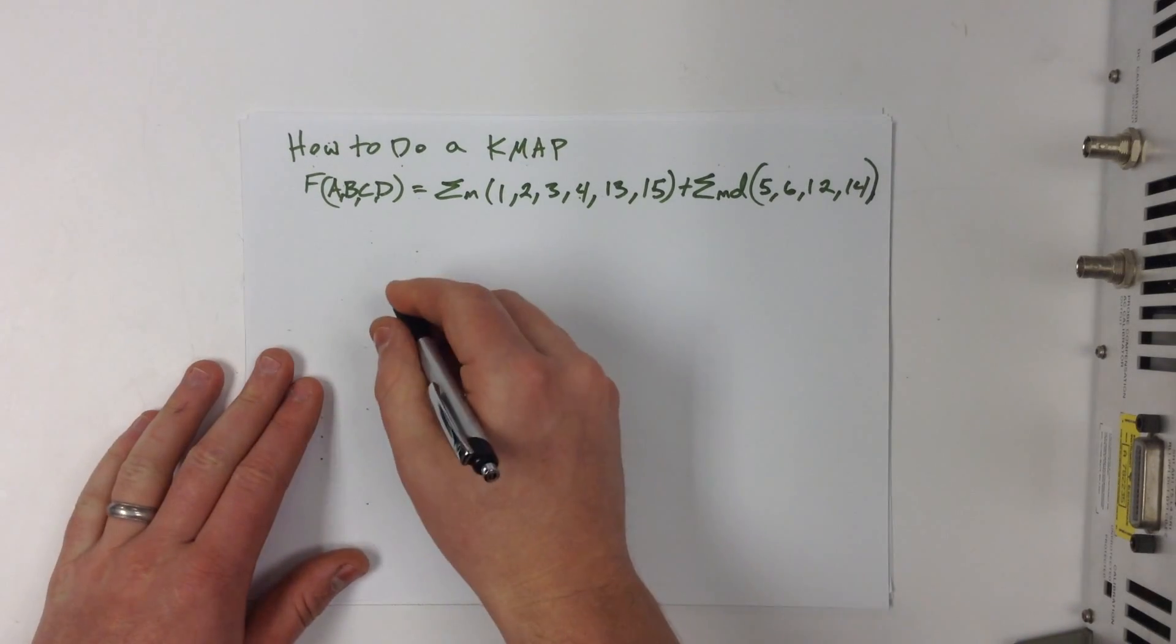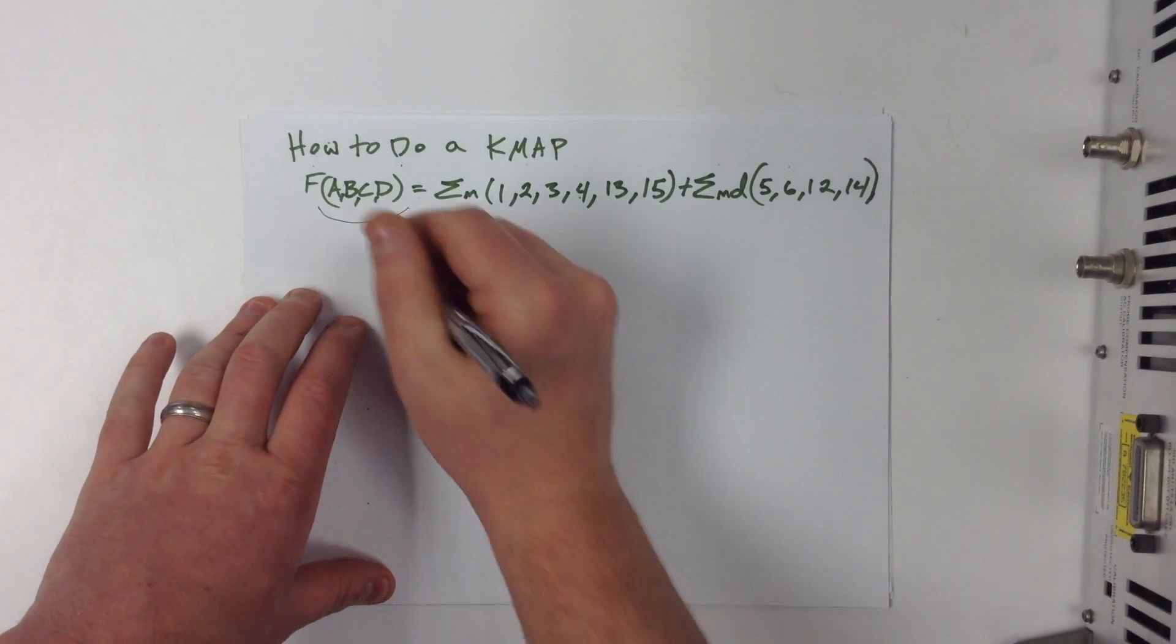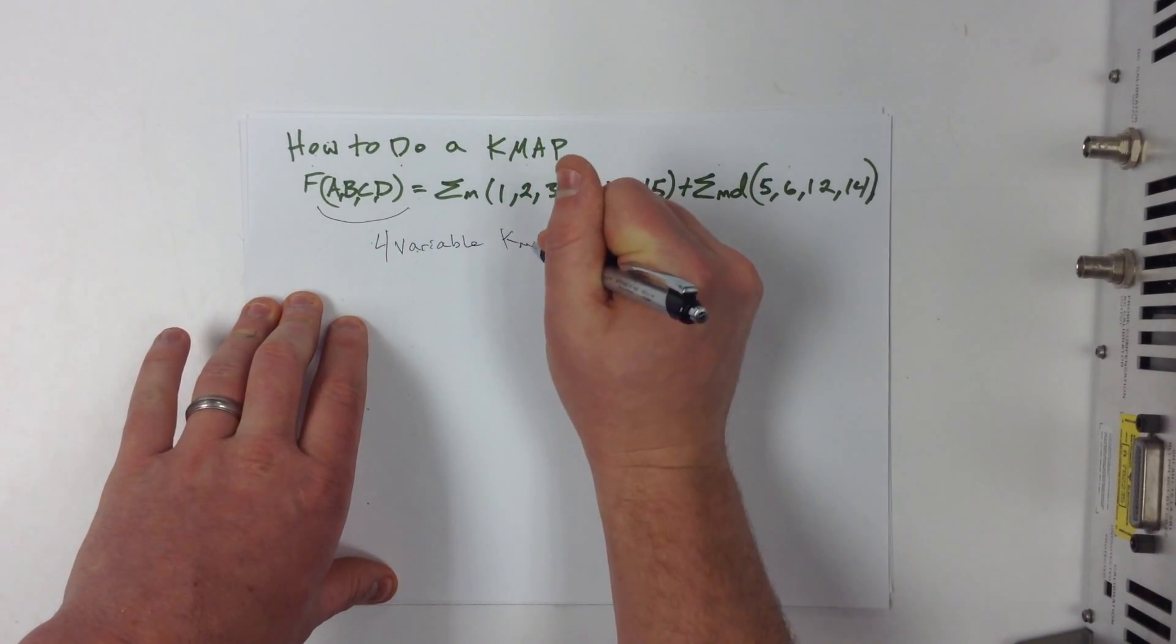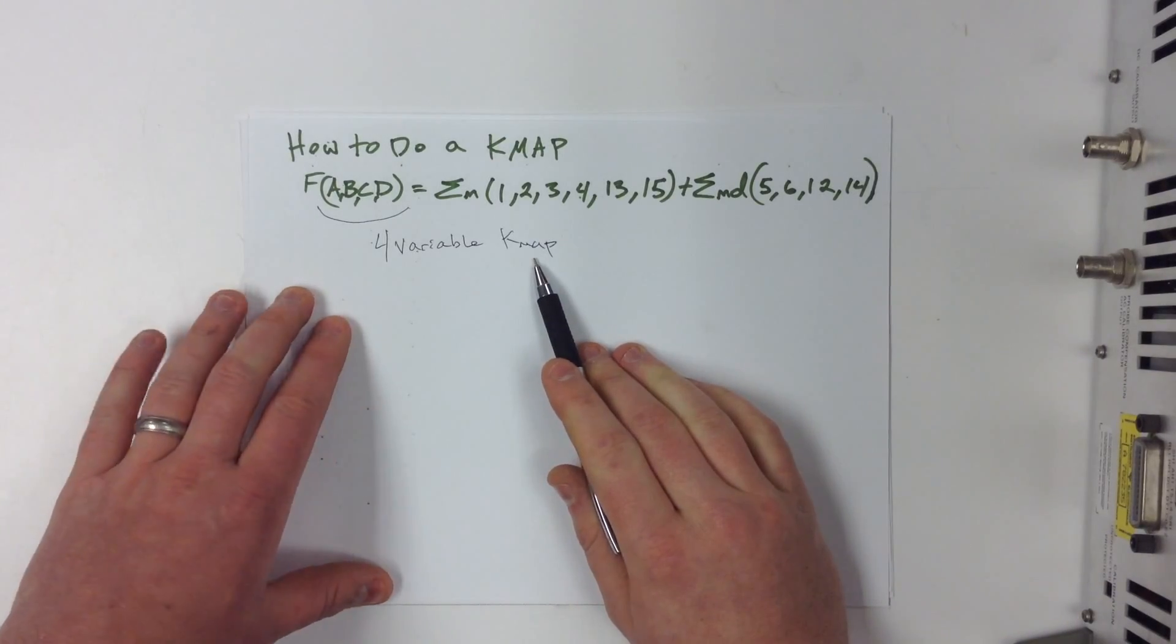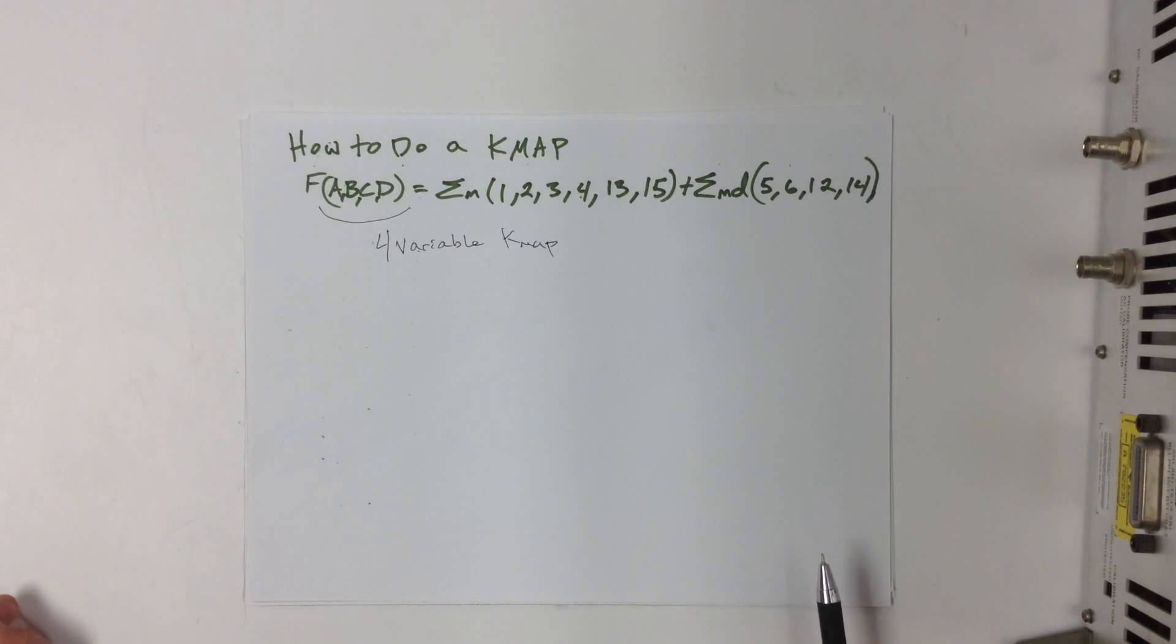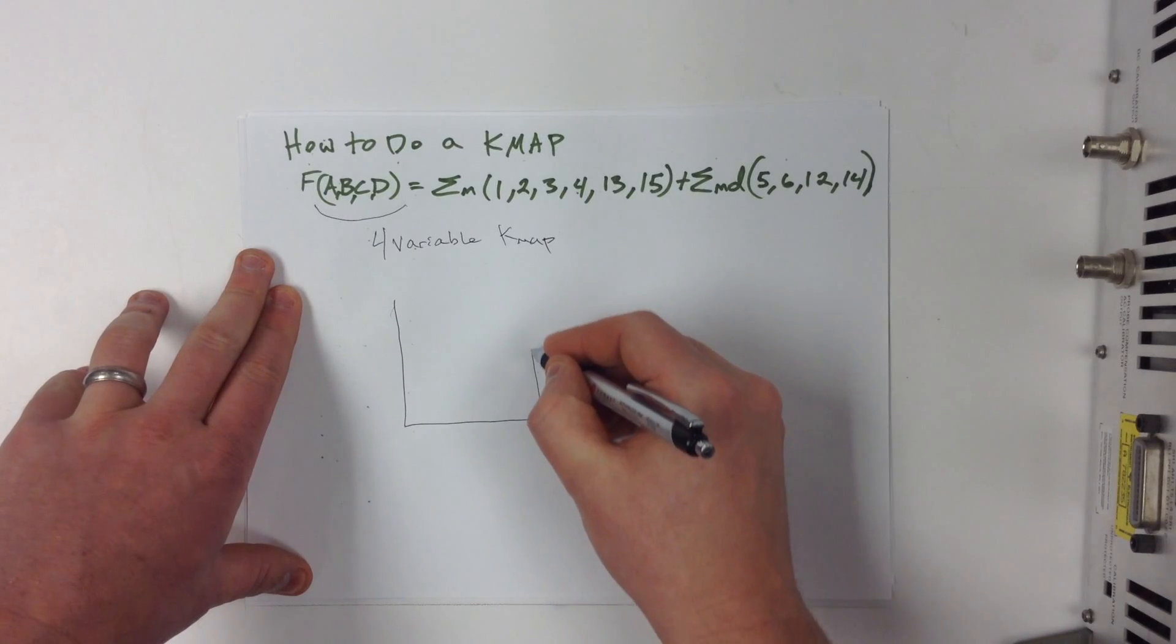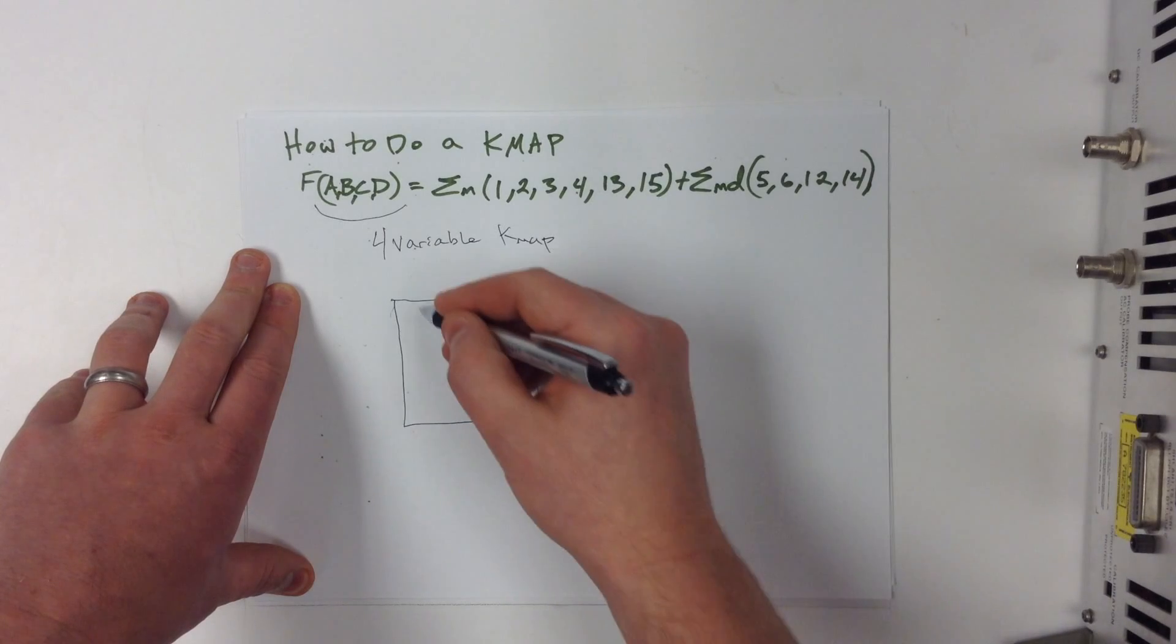First what we want to do with a K-map is we want to see how many variables we have. This is F of A, B, C, D, so we know that we have a 4 variable K-map. This is the largest variable K-map that I feel comfortable doing by hand. After that, it gets a little confusing. You have to go into three dimensions, and it's probably just easier to type your code into VHDL. So we're going to have 2 to the 4 squares in here. And we just set up a K-map like this.